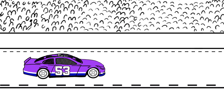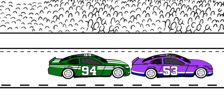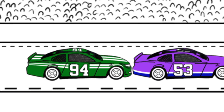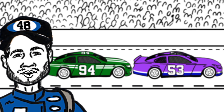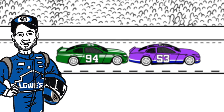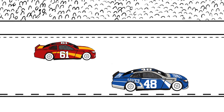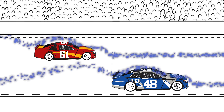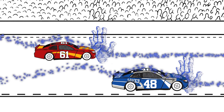Have you ever watched a race and seen one car right behind the other — sometimes with barely an inch between them? Why would we want to risk everything being so close to the other car? The answer is drafting. When cars are spread out on the track each car has to break through the air on its own, creating drag.